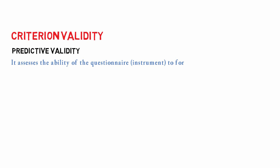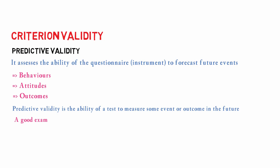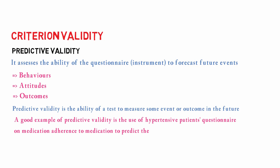Criterion validity is the second type, and its subtype is predictive validity. In this type of validity we assess the questionnaire for future events — meaning we are forecasting. For example, we check behaviors, attitudes, and outcomes. A good example is checking the questionnaire for medication adherence to predict future outcomes, such as systolic blood pressure control.